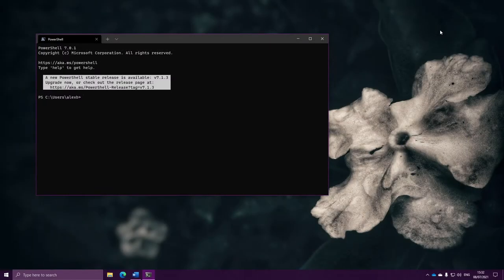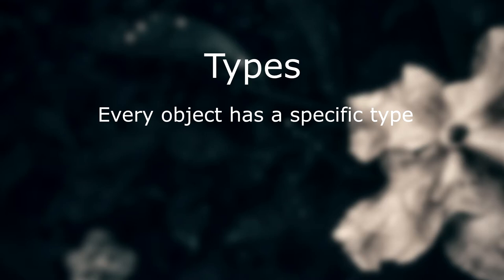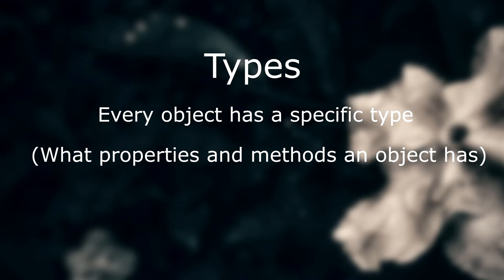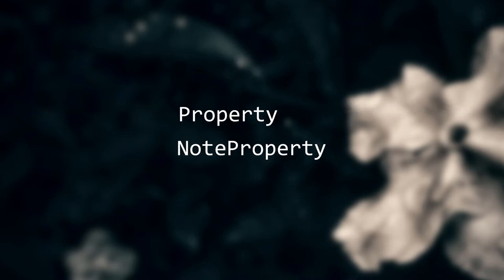Let's quickly summarise what we learnt in the last video. We learnt that we have types — every object has a specific type, and that type says what properties and methods the object will have on it. So whenever we have an object telling us about a process, that object has the type Process, and as such has all the members needed to represent a process. Of those members, we have properties, note properties, and most importantly, methods — the thing we learnt about last episode that allow us to perform actions on an object.